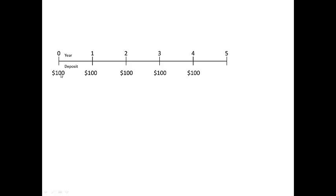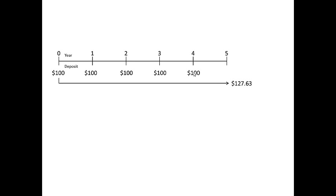The very first deposit of a hundred dollars incurs interest for all five years. The hundred dollars received at year zero will become $127.63, assuming an interest rate of 5% compounded over five years. Using the formula from the previous lesson, the amount is $100 times (1 plus the interest rate) raised to the power of five, because this hundred dollars was paid five years ago.